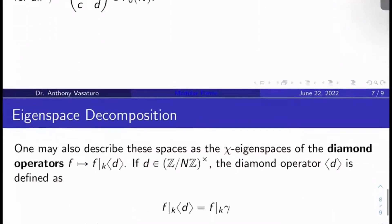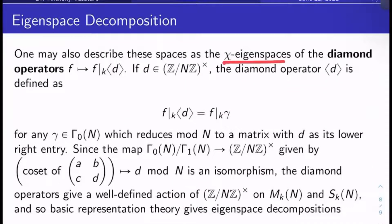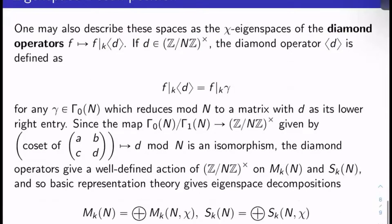Okay, so in other words, these spaces are the χ eigenspaces of what we call the diamond operators. Now the diamond operators, they take a modular form f and they send it to what we'll denote f bar sub k times this kind of diamond operator, dth diamond operator. What is this? Well, if d is in (Z/NZ)×, so it's a unit in Z mod NZ, the diamond operator bracket d is defined as follows. So it's written f bar sub k bracket d.